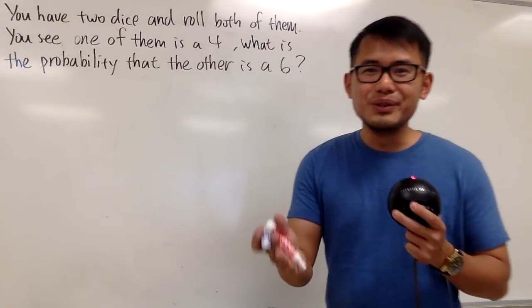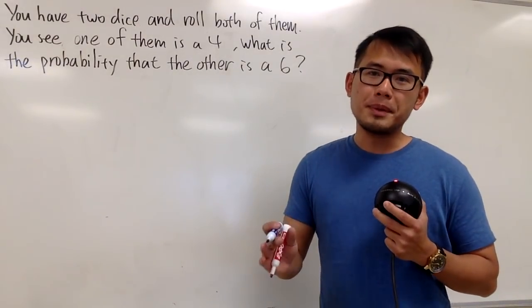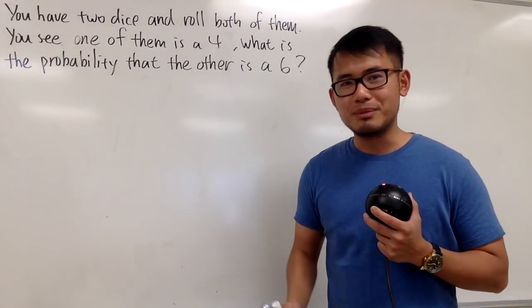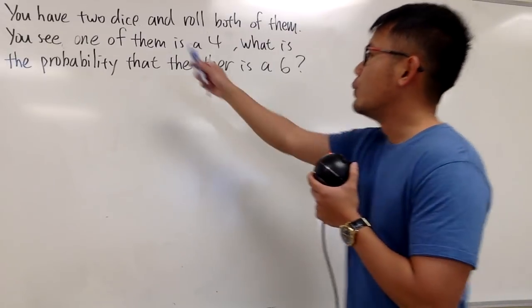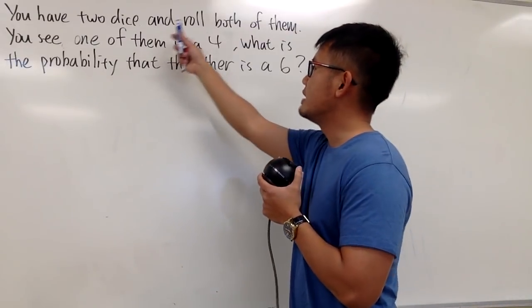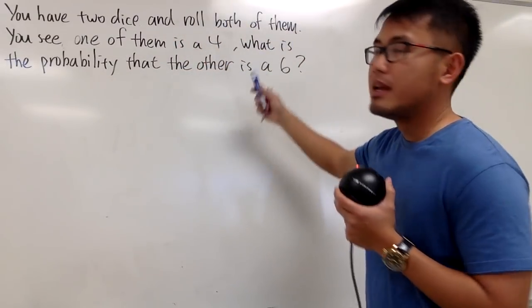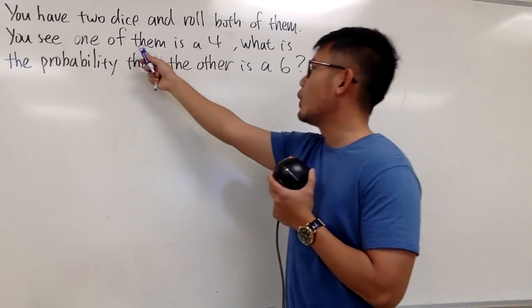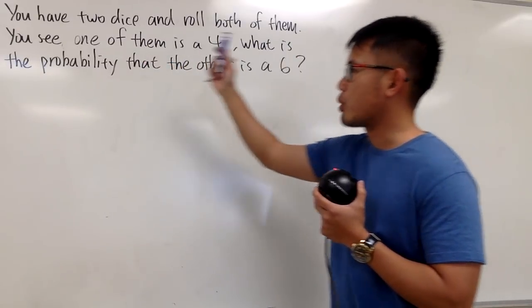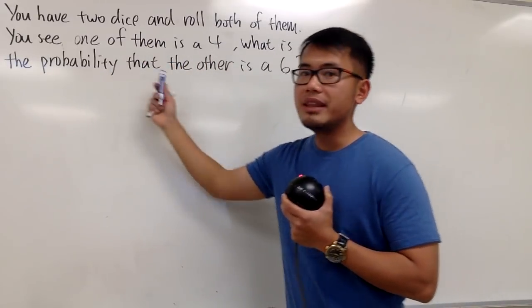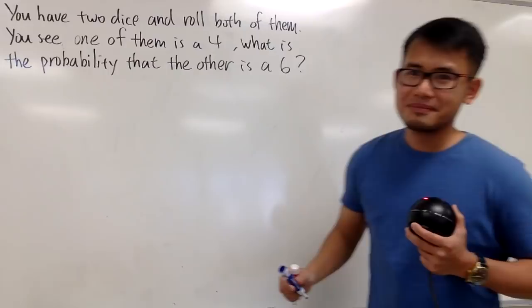Okay, Ethan, this video is for you, and this is also for whoever loves probability, including myself. And here's the question. We have two dice, and we are going to roll both of them. And we see that one of them is a 4, and we're trying to find out the probability that the other one is a 6.